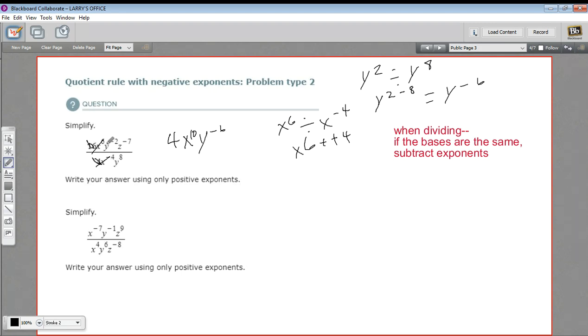And finally, so we got rid of our y's. We've just got a z to the negative 7th up top, so there's no z on the bottom. We'll just write that up top.